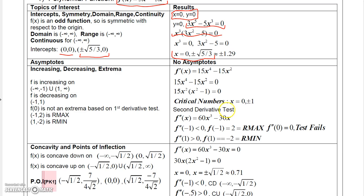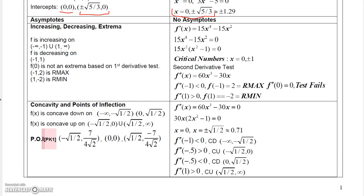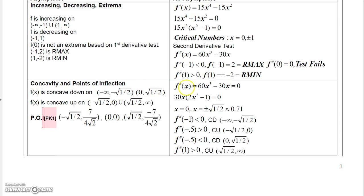Using the second derivative test I determined that this function is increasing from negative infinity to negative 1 and from 1 to infinity, and decreasing from negative 1 to 1. f(0) is not an extrema based on the first derivative test. There is a relative max at (-1, 2) and a relative min at (1, -2).